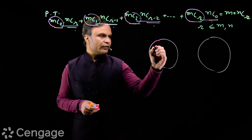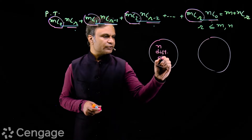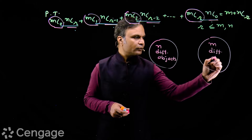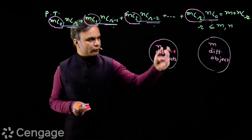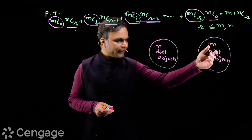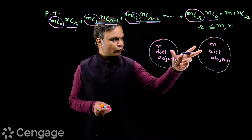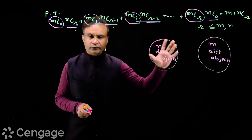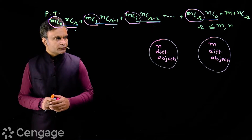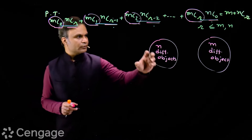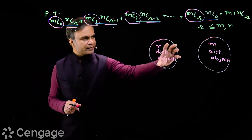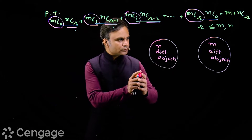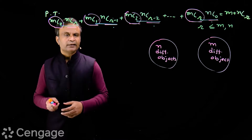In the first group, we have n different objects, and in the second group, we have m different objects. None of the objects of this group is the same as any object of the other group — no object in both groups is the same. In fact, we have a total of m+n distinct objects. Now, suppose we have to select r objects from these two groups, keeping them separate.